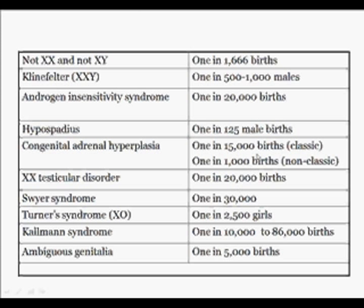If you look at this chart, these are current statistics on individuals who do not fit the stereotype of an XX female or XY male. Those individuals, at least genetically, occur one in every 1,600 births. For example, Klinefelter's XXY individuals occur in one in 500 to 1,000 births. Androgen insensitivity syndrome occurs in one in 20,000. One in 5,000 births are individuals who have ambiguous genitalia — at birth, one cannot tell whether they are male or female from their external phenotype.